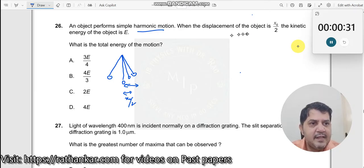Now, what does it say? When displacement is x₀/2, the kinetic energy is E. So we know the total energy E' equals kinetic energy plus potential energy.